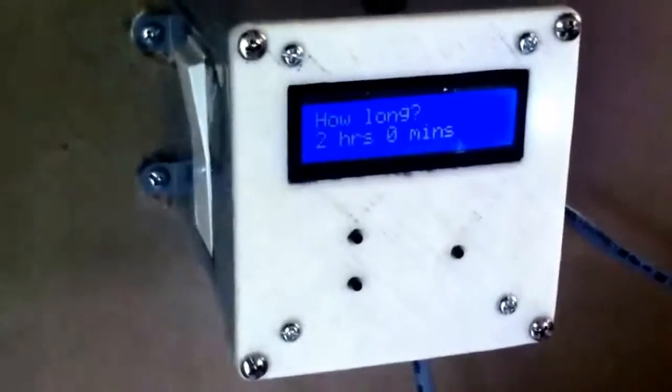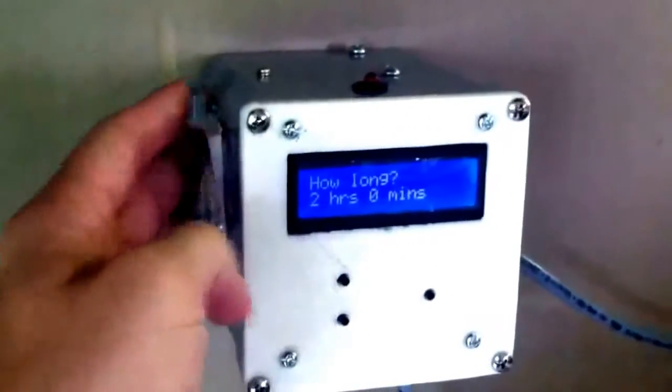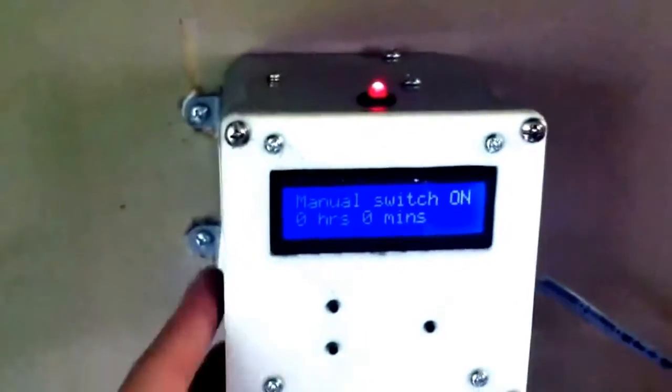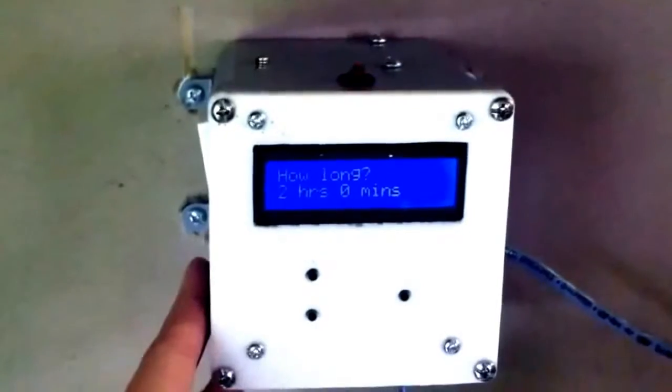To start off, we'll just go the easy way. This switch is a manual switch. Flip this up. You can see the water is running. Whenever the water is running, I always have this red LED on. Just so you know for sure. Turn this off. Light goes off. You can hear the valve close.